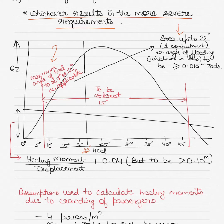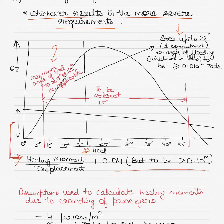The heeling moment is shown on the GZ curve. The maximum righting lever is calculated as the heeling moment divided by displacement plus 0.04, but the value should be greater than 0.01 meters. These aspects on the GZ curve correspond to everything I explained in theory above, so spend some time understanding this GZ curve.